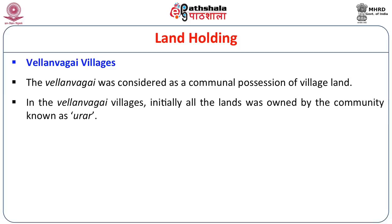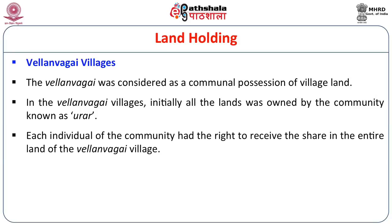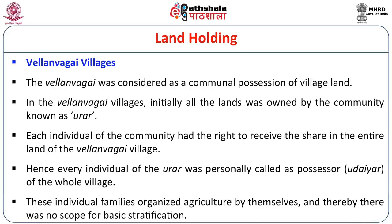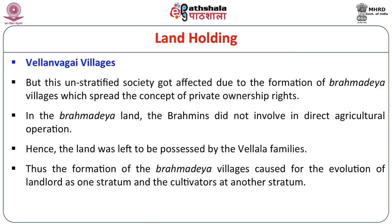In the Vellan Vahai villages, initially all land was owned by the community known as Urar — the inhabitants of the Ur. Each individual had the right to receive a particular share of the entire village land, and every individual was personally called an owner (Udayar) of the whole village. These individual families organized agriculture themselves, and therefore there was no scope for social stratification. The production from common cultivation was shared by all cultivators in the village.